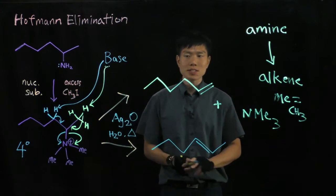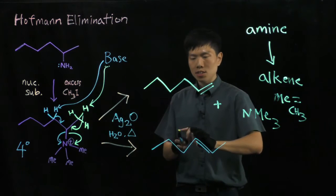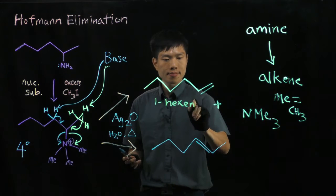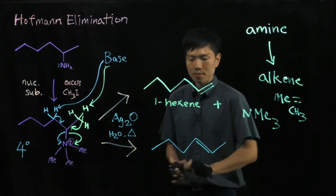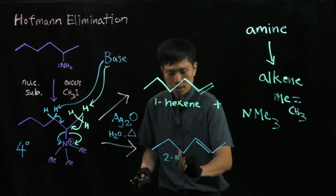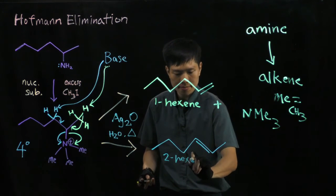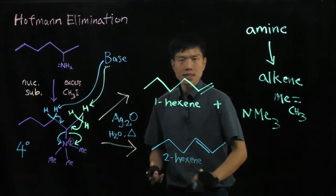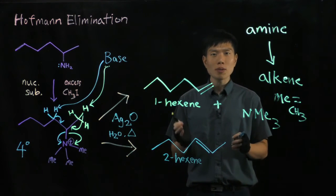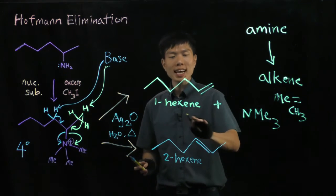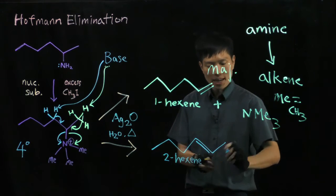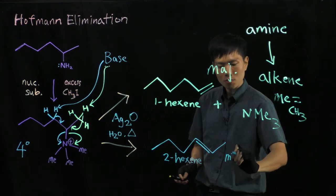Now how do we name these? The top one — counting 2, 4, 6 — we have 1-hexene. The bottom one — counting 2, 4, 6 — these are isomers; this is 2-hexene. In the research lab, we have tried this experiment many times and find that the major product from this reaction is always 1-hexene, and 2-hexene is minor or sometimes we don't even get it.